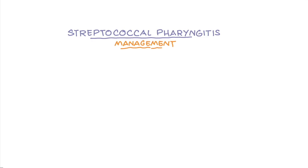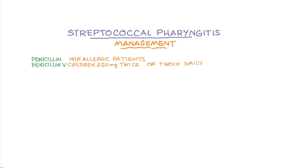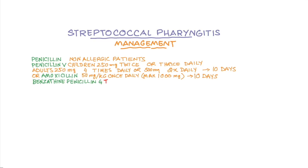For management of strep throat, the CDC recommends penicillin in non-allergic patients: Penicillin V — children 250 mg two or three times daily, adults 250 mg four times daily or 500 mg twice daily — for 10 days. Alternatively, amoxicillin 50 mg/kg once daily (maximum 1000 mg) for 10 days, or benzathine penicillin G IM as a single dose — 600,000 units if less than 27 kg, or 1,200,000 units if greater than 27 kg.